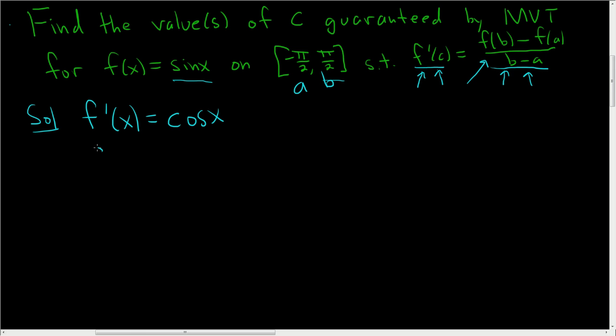So let's do it. So it'll be f of pi over 2 minus f of negative pi over 2 all over pi over 2 minus negative pi over 2. Really, this problem, all you do is write this stuff down and then just solve.